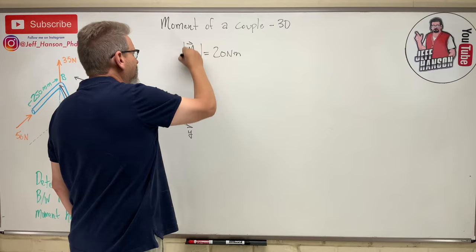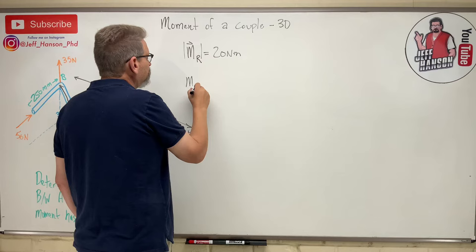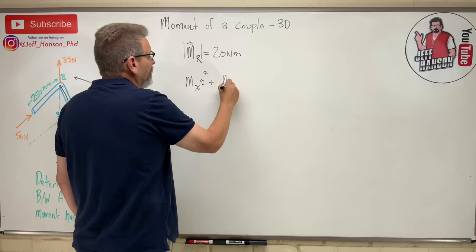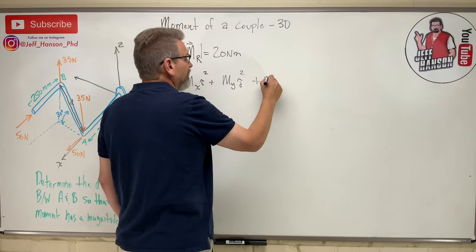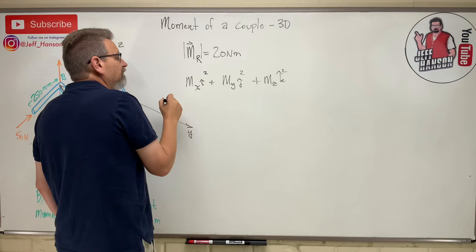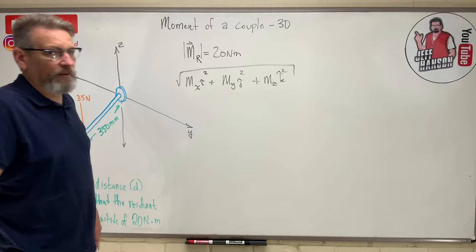What does that mean? The resultant moment, we'll call it M_R, equals 20 Newton meters. That's resultant. So that's going to mean that what we do is we take the moment about the x, which will be i-hat squared, plus the moment about the y, j-hat squared, plus the moment about the z, k-hat squared, and square root it.